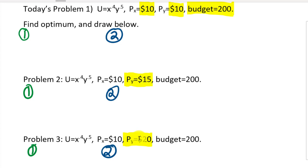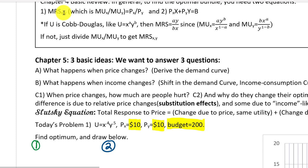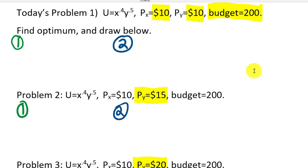Setting up the two equations: the first equation uses the shortcut rule — MRS equals the exponent on x times y over the exponent on y times x. So for problem one, that gives 0.4y / 0.5x = Px/Py = 10/10 = 1. For problem two the ratio is 10/15, which simplifies to two-thirds. For problem three it's 10/20, which simplifies to one-half.